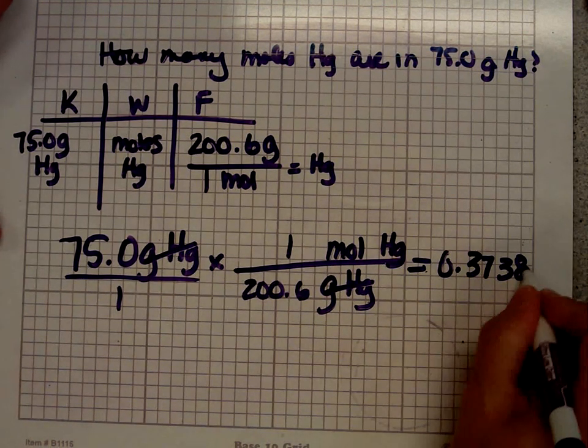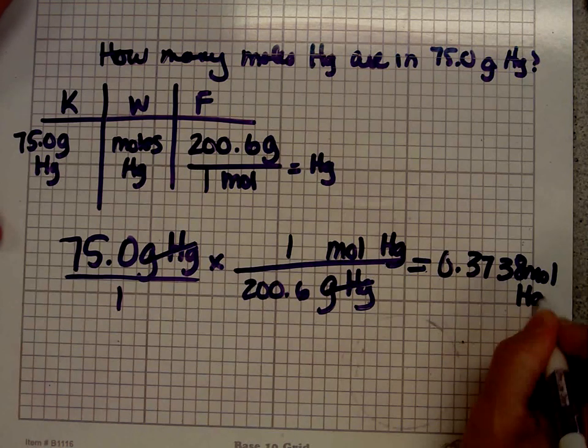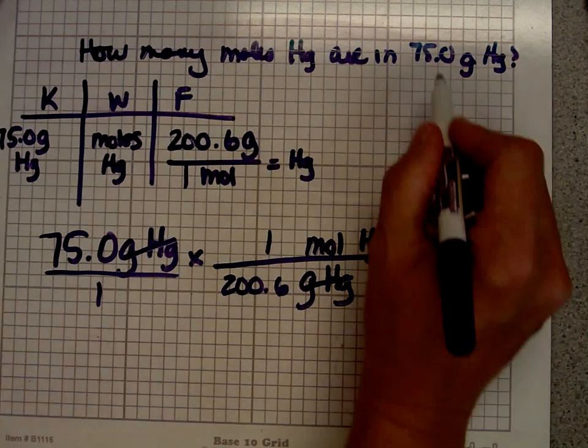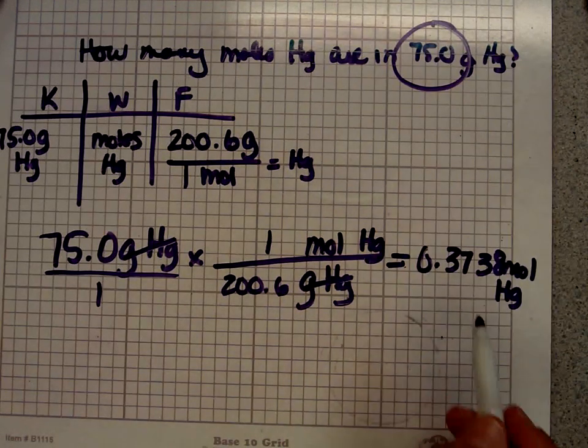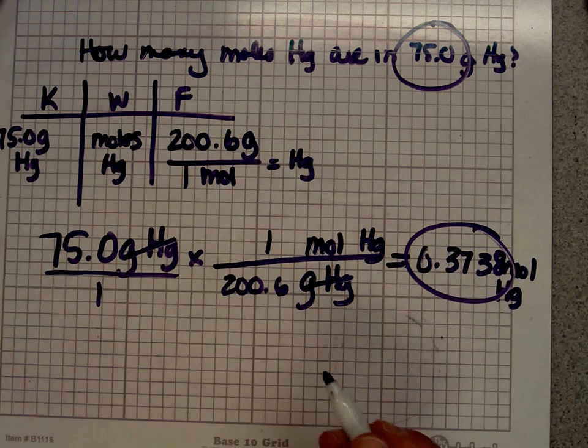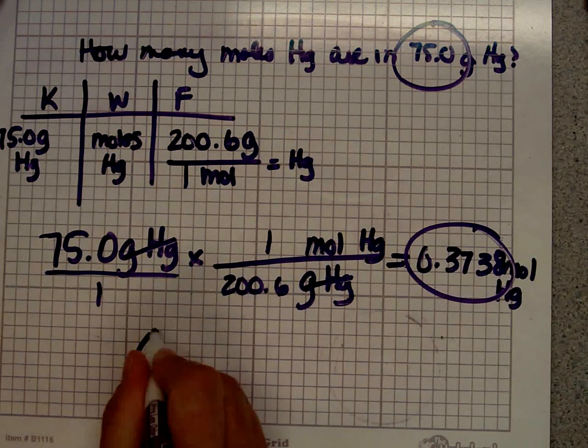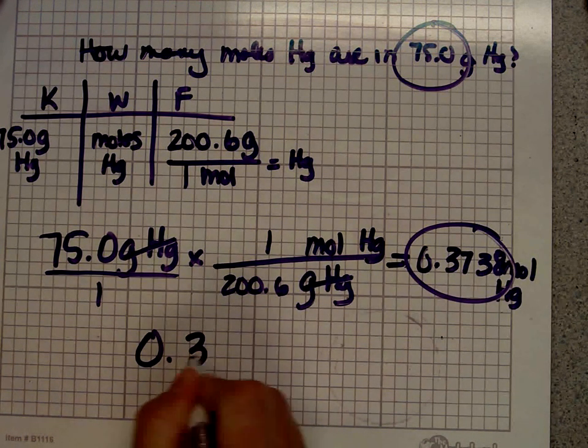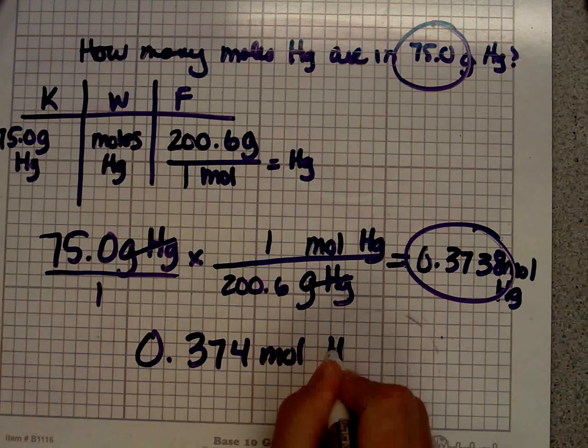But in chemistry, and that's moles of mercury. But in chemistry, I need to make sure that I use significant figures. This number has three significant figures, so my answer must have three significant figures. So that becomes 0.374 moles of mercury.